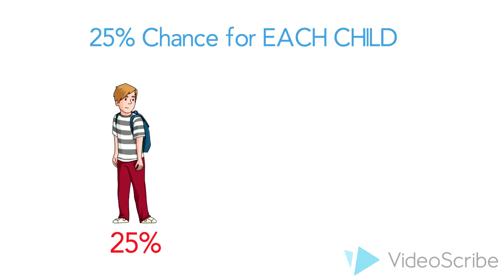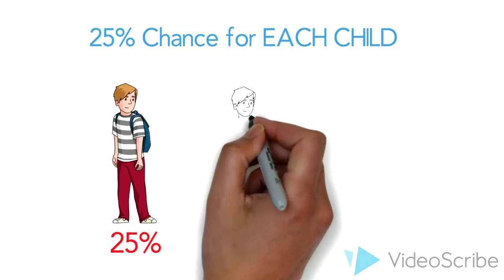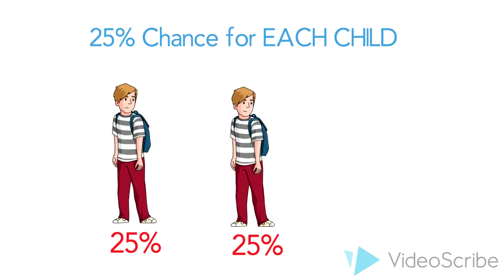That means, if one child expresses the symptoms of the disease, the next child still has a 1 in 4 or 25% chance of expressing the disease.